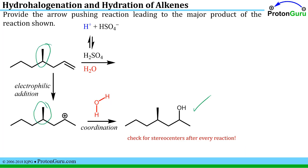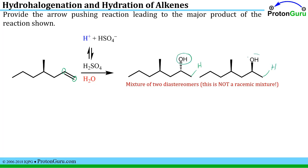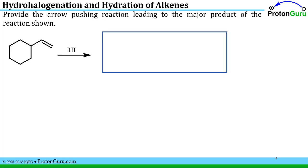Now check for stereocenters. There is a stereocenter that existed from the start — we didn't make or break any bonds to that stereogenic carbon, so it retains its stereochemistry. But this other site was achiral in the starting material and in the intermediate; now it's a stereogenic center, so we should have a mixture of R and S at that position. The major product is a mixture of two diastereomers — not a racemic mixture. A racemic mixture is specifically a 50-50 mixture of enantiomers. The oxygen attaches to the more substituted carbon, giving the Markovnikov addition product.